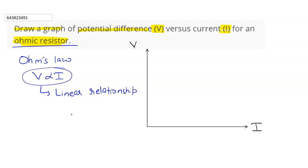For a line, we know that the equation is Y equals Mx plus C. We know that for an ohmic resistor, V equals IR.